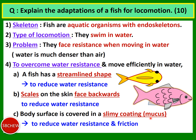The third adaptation is that the body surface is covered in a slimy coating of mucus to reduce water resistance and friction. Many fish produce mucus from cells to cover their bodies, making it very slippery so water flows easily over the surface. All three adaptations start with 'S' — streamlined shape, scales facing backwards, slimy coating of mucus — use this as a memory aid to remember the three adaptations.